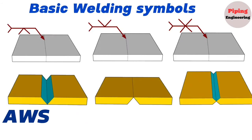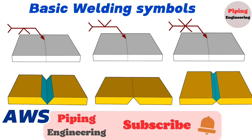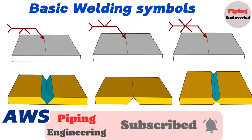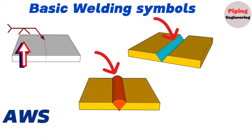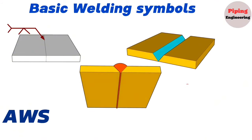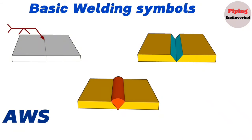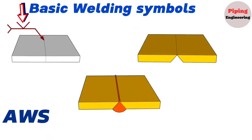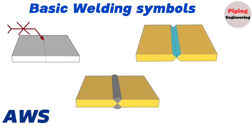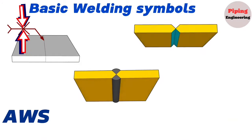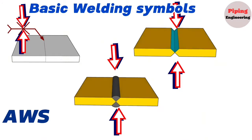V-groove welds have bevels cut on both sides of the weld joint, with an included angle shown above the symbol. V-groove symbols below the reference line indicate welding on the top side (arrow side); above indicates the bottom side (far side). Engineering drawings sometimes call for welds on both sides, so symbols appear on both sides of the reference line. Other welding symbols will be covered in future videos.